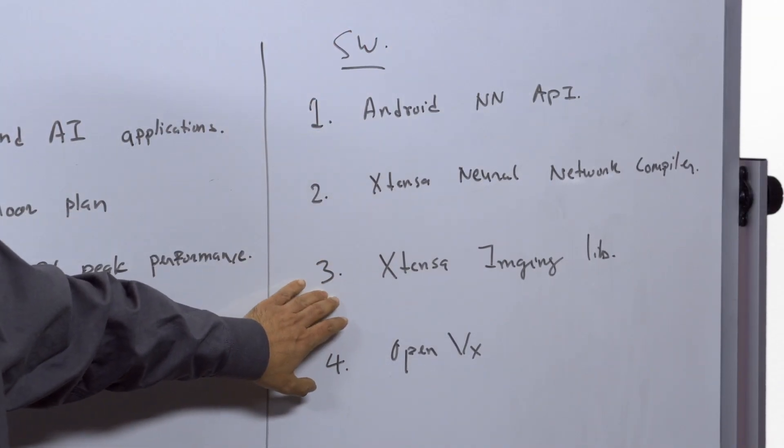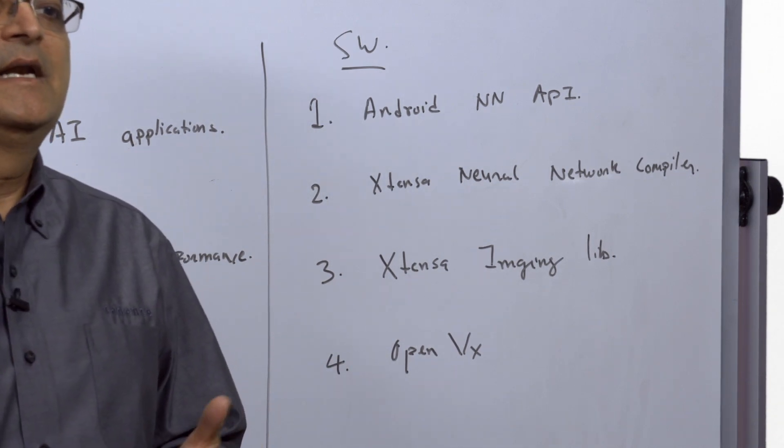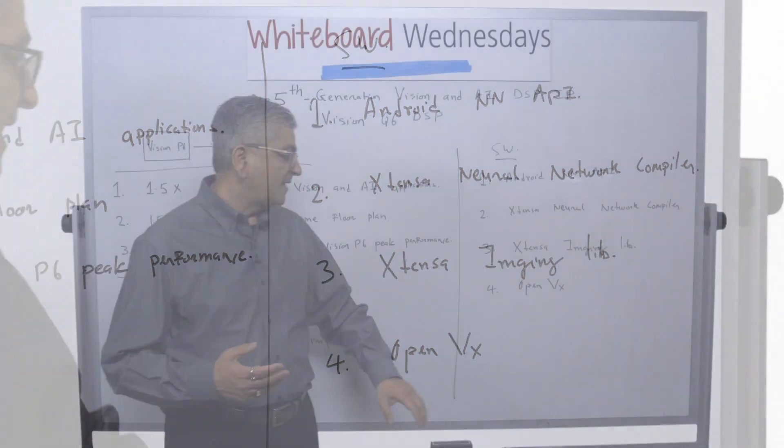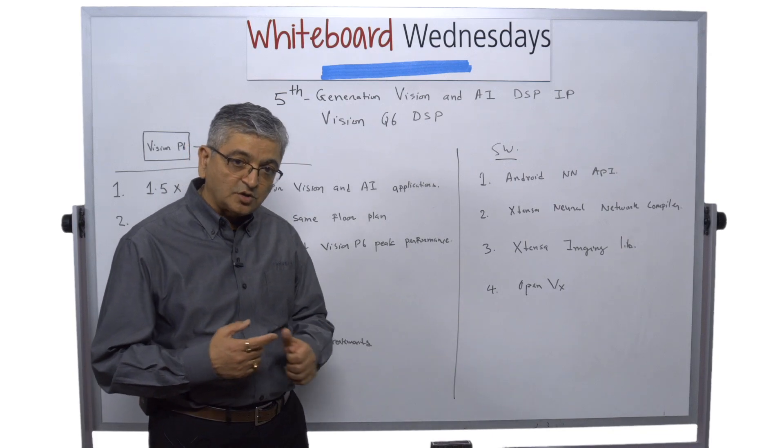We also have our Extensor imaging library. We have over 1500 imaging library functions that we can provide. And we are also providing our OpenVX software solutions.